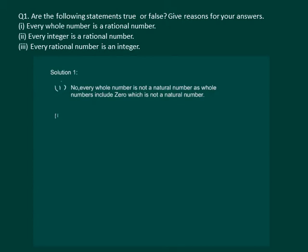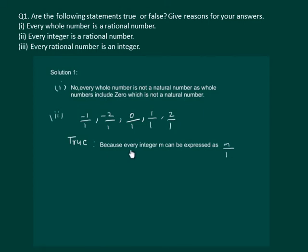The second part of the same question has the statement: every integer is a rational number. Clearly, all the integers will satisfy the condition for being a rational number, so the statement is true, because every integer m can be expressed as m by 1.